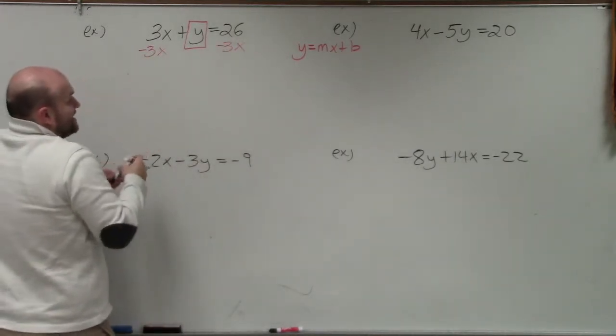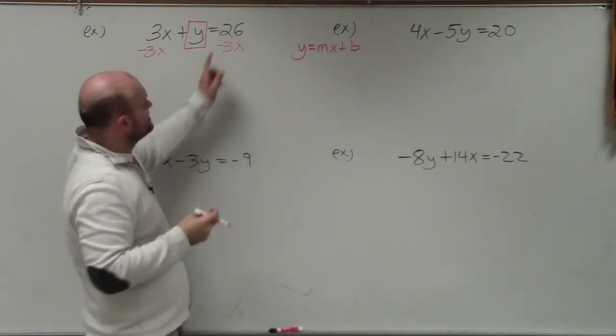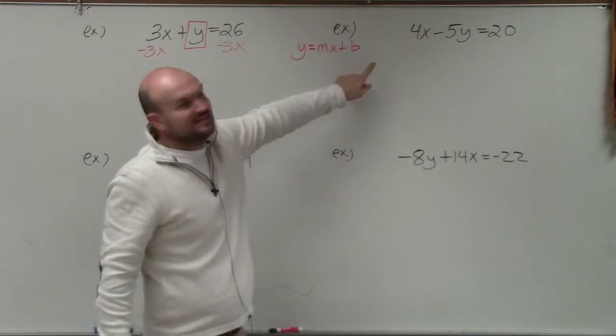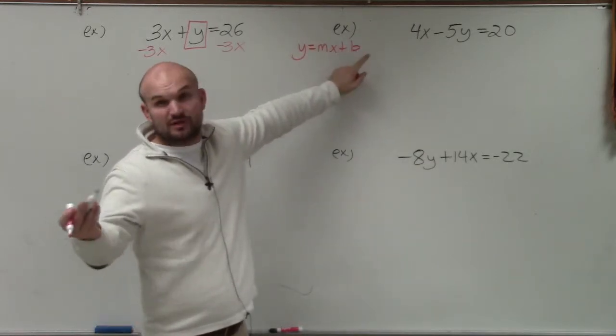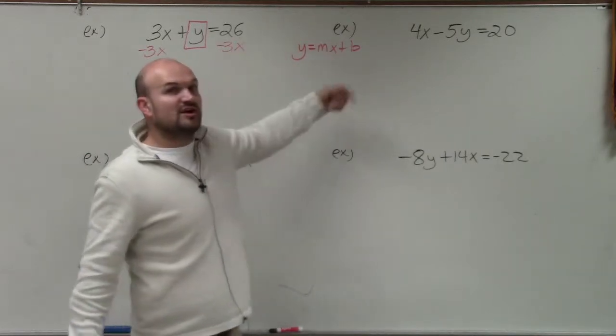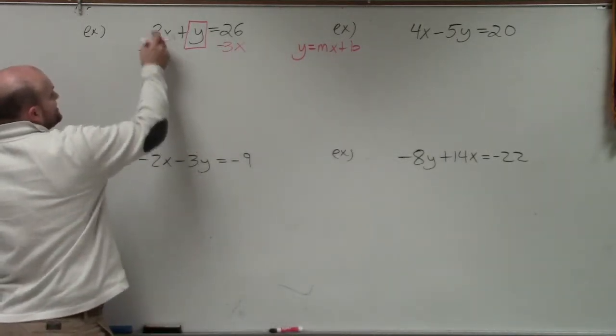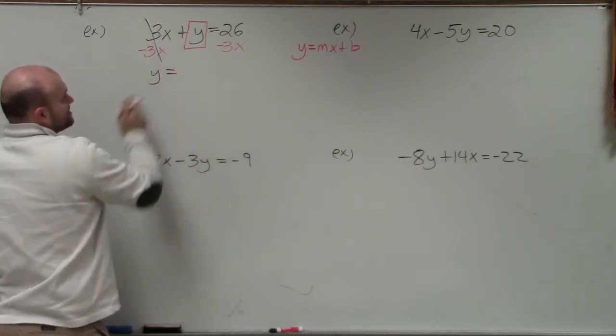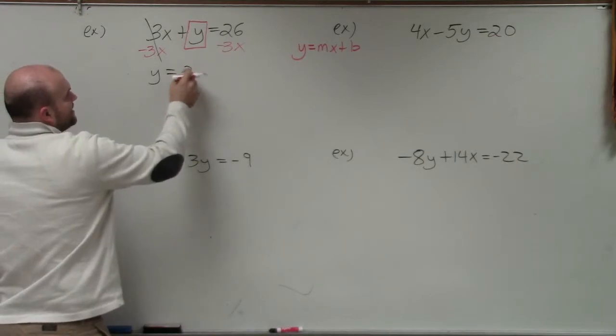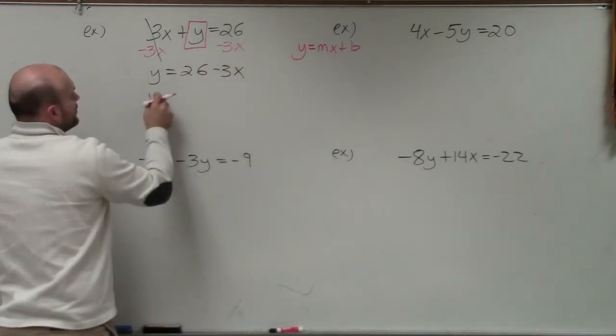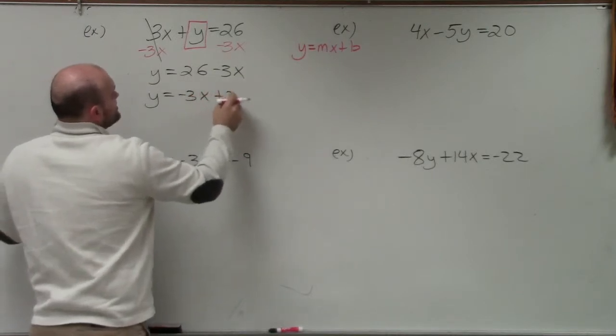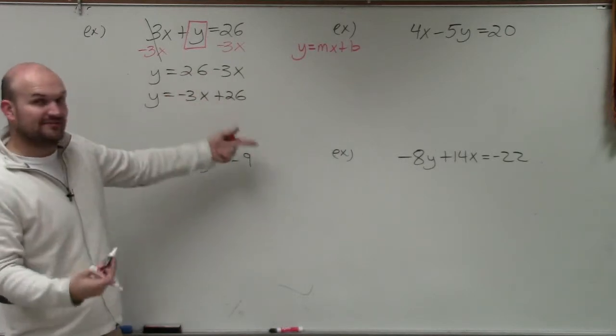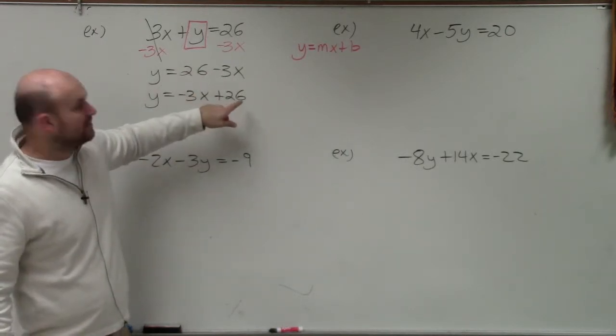I can't subtract a 3x from a y. One thing we notice is when we're writing it in slope-intercept form, we always want to have our variable x in front, where m and b represent real numbers. So we're always going to write our x term in front of our number. 3x minus 3x, that's going to go to 0. So I still have my y. I don't need to pin anymore because it's all by itself. Rather than writing this as 26 minus 3x, we prefer to write this as negative 3x plus 26.